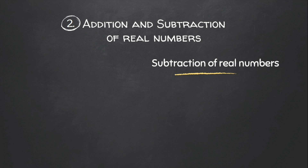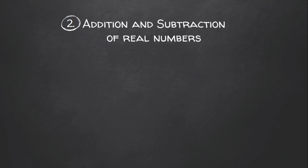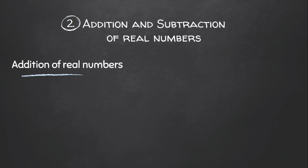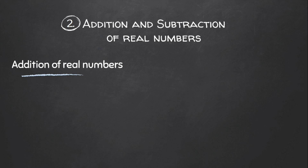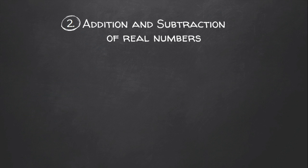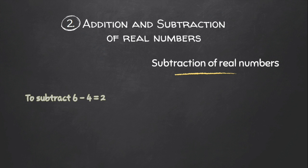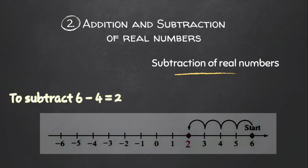Addition and subtraction can be visualized on the real number line. For addition, we first locate the addend on the real line and move to the right by the desired number of addends. For subtraction, we first locate the minuend on the real line and move to the left by the desired number of the subtrahend.